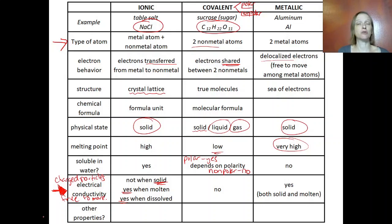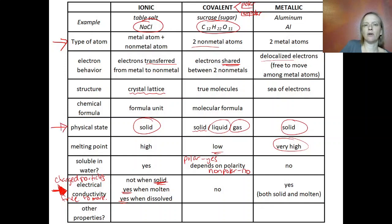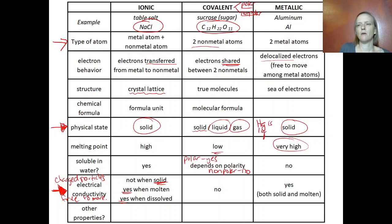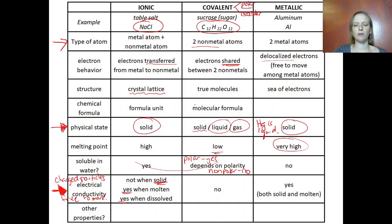If you've got a mystery substance, those properties can help you judge whether it's ionic, covalent, or metallic. If you've got a gas or a liquid, you're probably dealing with a covalent substance — the only metal that is a liquid at room temperature is mercury. Those are the properties that can help you identify what sort of substance you're dealing with. I hope this helps.